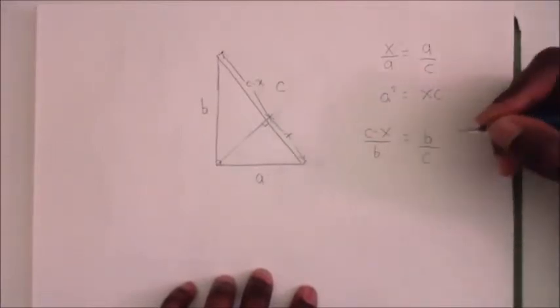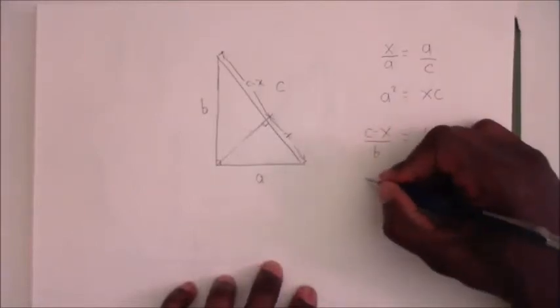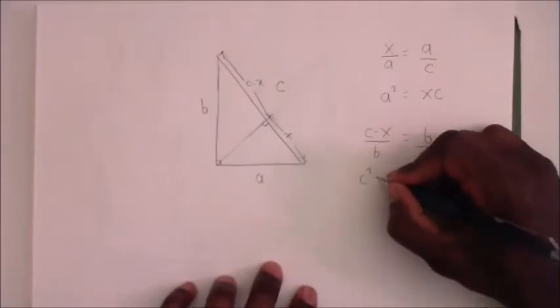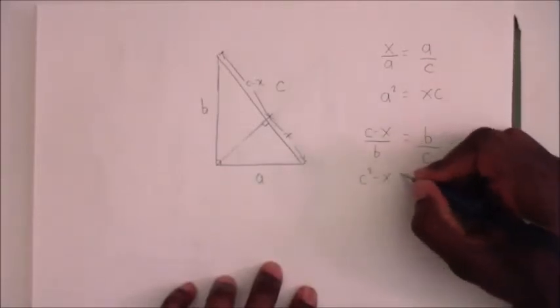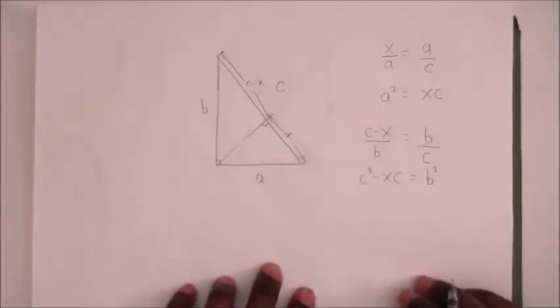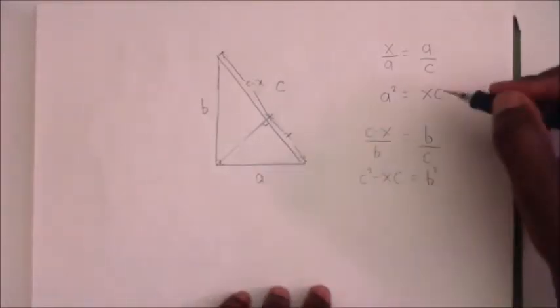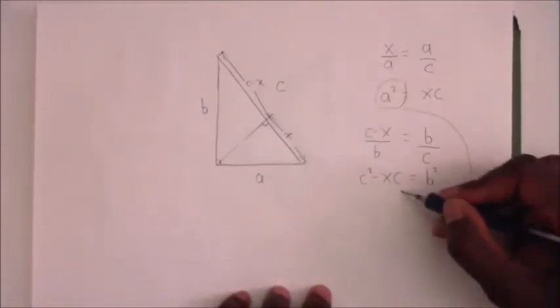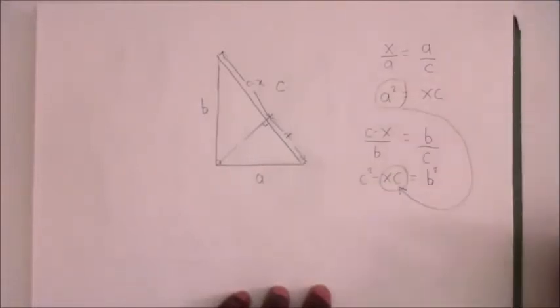So we can say now C minus X over B is equal to B over C. So we can say now C squared minus X C is equal to B squared. Well, we know that X C is equal to A squared, so I will essentially substitute that in there.